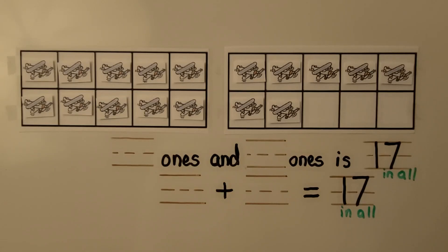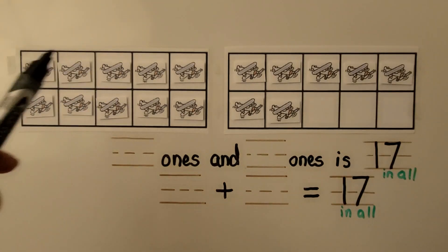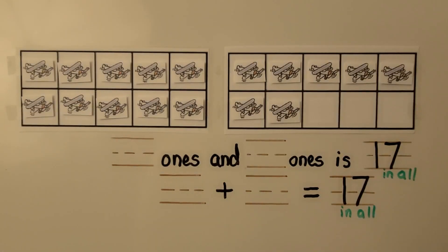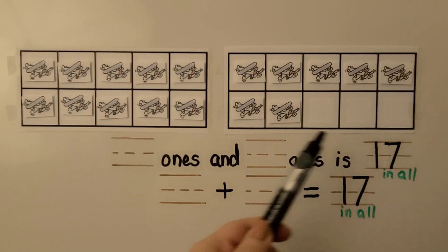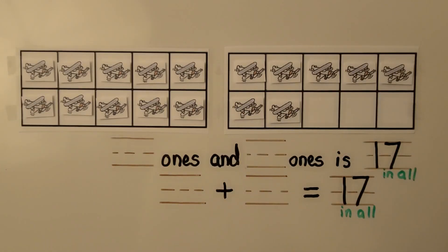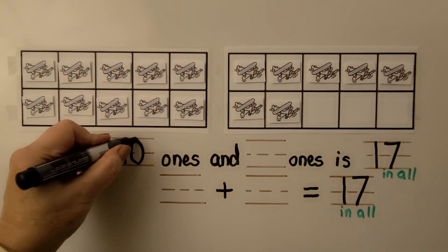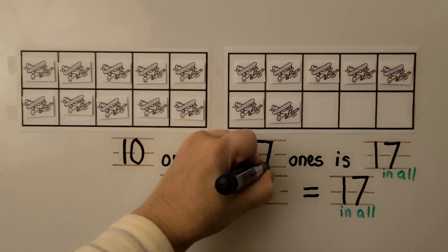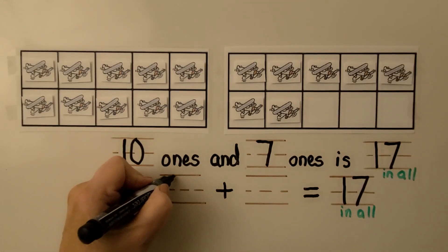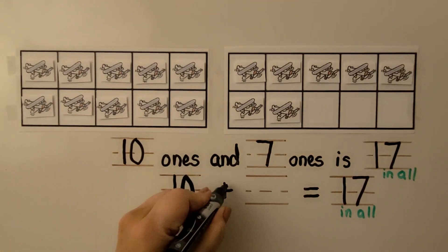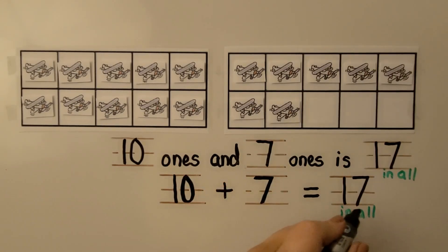Here we have some airplanes. We can see there are 10 airplanes in the first 10-frame because it's full — we don't need to count them, we know there are 10. We can count the airplanes in the second 10-frame: 1, 2, 3, 4, 5, 6, 7. There is 10 and 7 more. There are 10 ones and 7 ones. 10 ones and 7 ones is 17 in all. We can write an addition sentence: 10 plus 7 is equal to 17.